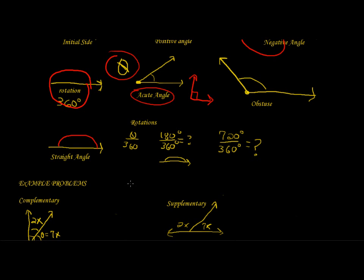To calculate how many rotations, or how much of a rotation a ray is making around an initial side, just put the measure of the angle, or the measure of theta, over 360. So 180 degrees over 360 degrees is half of a rotation. 720 degrees over 360 would be two full rotations.